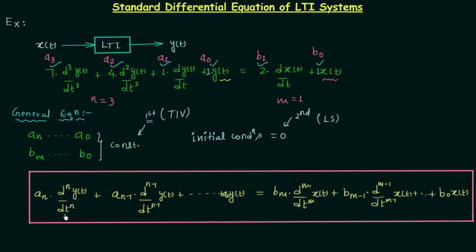In examination, whenever a differential equation of an LTI system is given, simply match it with the standard equation where a_n, a_{n-1}, ..., a_0 and b_m, b_{m-1}, ..., b_0 are constant coefficients, and also look for the initial conditions. If the initial conditions are not given, assume they are zero. This is one important point — if they are not mentioned, assume them to be zero, meaning the given system is linear. And obviously if the equation matches the standard form, the coefficients are constant, confirming it is an LTI system.